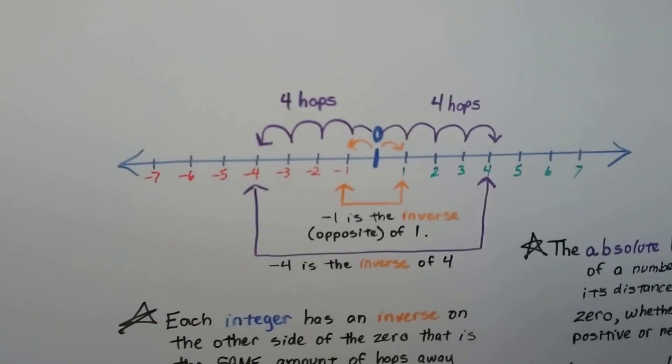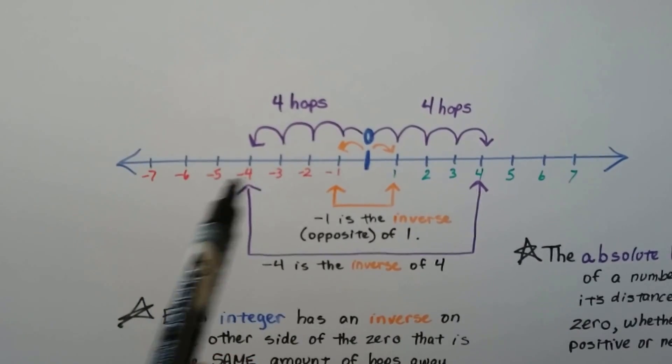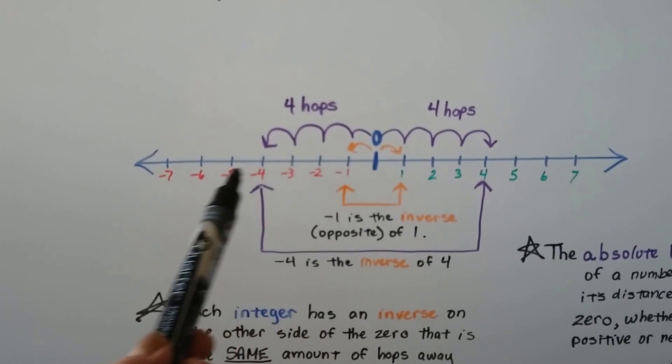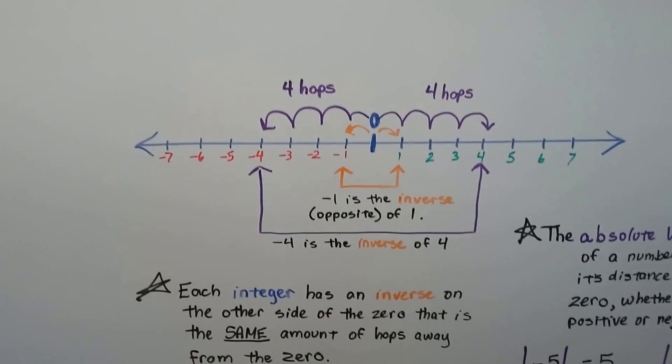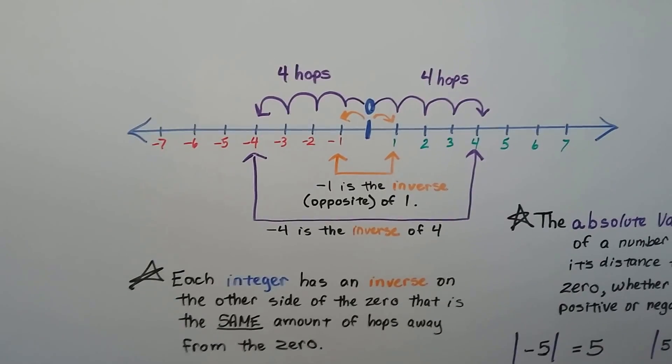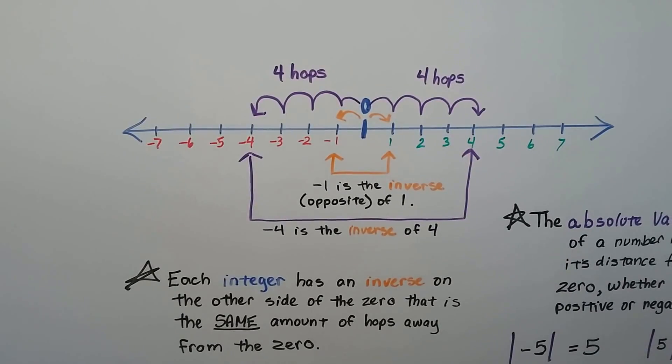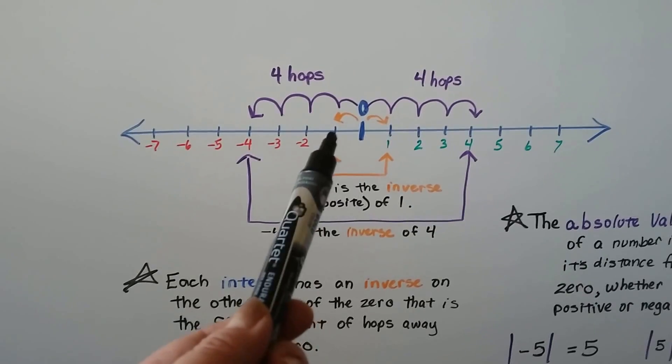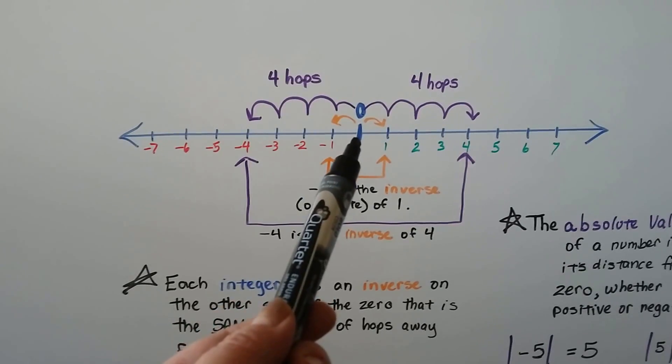And on a number line, if you look on each side of 0, it kind of looks like a mirror of numbers, except these have negatives. Each integer has an inverse on the other side of 0 that is the same amount of hops away from 0.